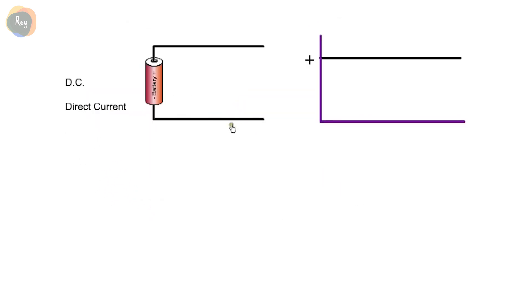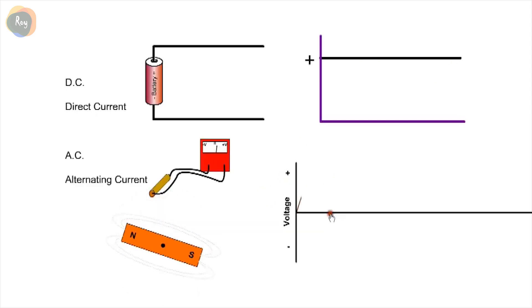The current flow from a battery is DC, direct current. If we look at the voltage, it's constant. If we look at the voltage waveform from a generator, it's changing from positive to negative. If this alternating voltage waveform is applied to a circuit, it will result in an alternating current flow.